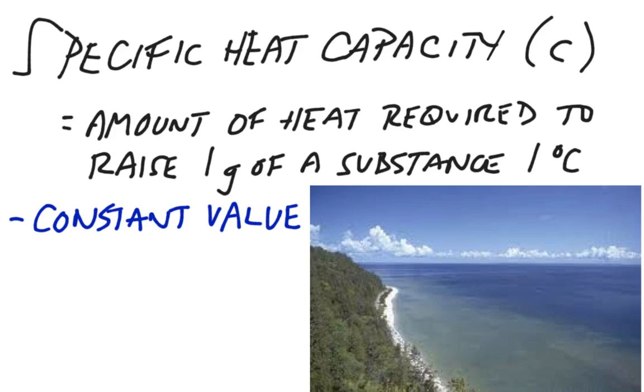The unit we typically use for specific heat capacity is joules per gram times degree Celsius. You'll see this expressed different ways on the Internet, like calories per gram Kelvin. There are other units, but basically you're ending up with a unit of energy on top over a mass times temperature unit on the bottom.